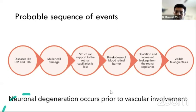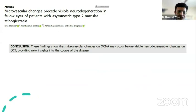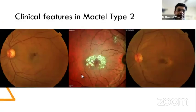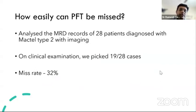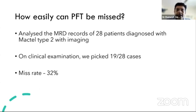We believe neuronal degeneration occurs prior to vascular involvement. However, a recent paper using OCT angiography in patients with no structural changes on OCT found that vascular changes occur much earlier than previously thought and can be identified on OCTA. Clinical features in MacTel type 2 include perifoveal graying, loss of retinal transparency, pigment plaques, superficial retinal crystals, neovascularization, right-angle venules, and pigment plugs.